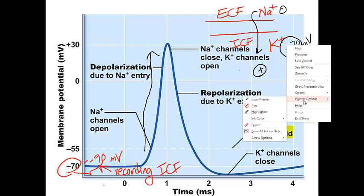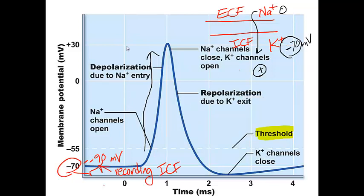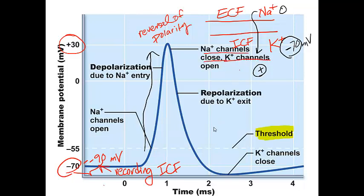When the action potential occurs, you can see on the graph that the potential automatically rises to plus 30 millivolts — this is the point of polarity reversal. Then the potassium channels open, sodium channels close, and potassium rushes back out of the cell, producing repolarization. These are the main parts of the action potential you need to know; you'll learn more in Chapter 11.